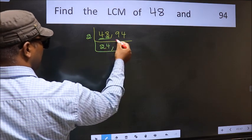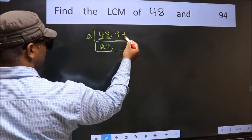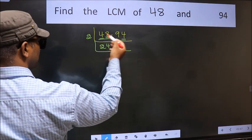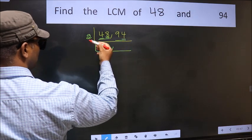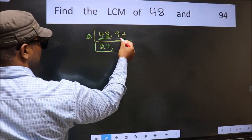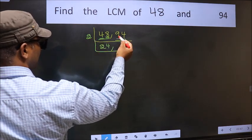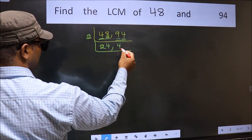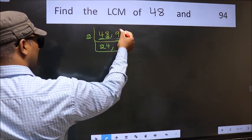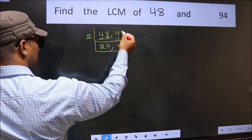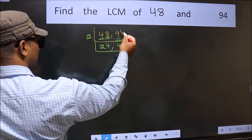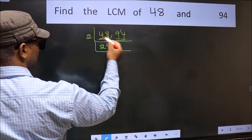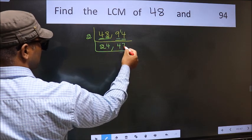Now the other number is 94. The last digit is 4, which is even, so it is divisible by 2. The first digit is 9 — a number close to 9 in the 2 table is 2 times 4 = 8. So 9 minus 8 is 1, carry 1 forward to get 14. When do we get 14 in the 2 table? 2 times 7 is 14.